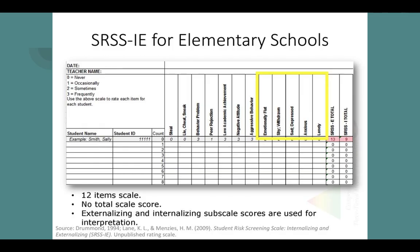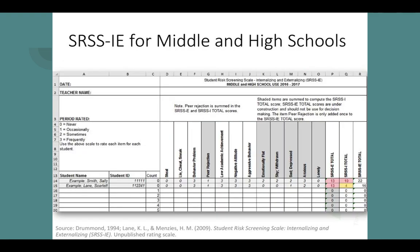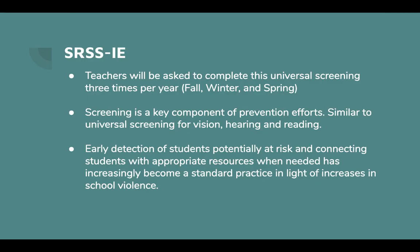Here is an example of what the screener looks like. There is a screener for elementary students and one for middle and high school students. Your students' names will be filled in for you, and you will rate each student using a Likert scale for each item. Teachers will be asked to complete this universal screening three times per year: fall, winter, and spring. Screening is a key component of prevention efforts, similar to universal screening for vision, hearing, and reading.